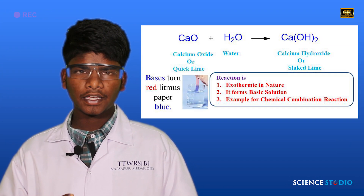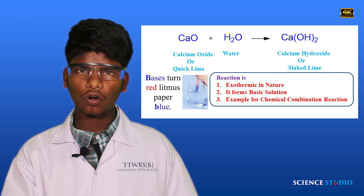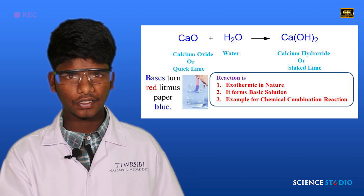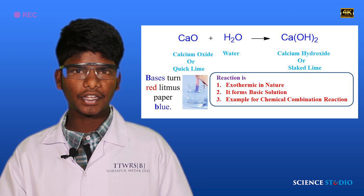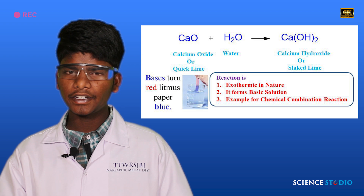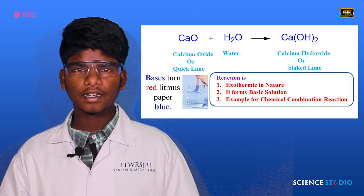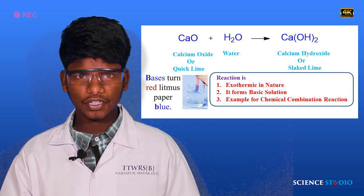The red litmus paper turns to blue, which indicates the solution is basic in nature. The conclusion is: calcium oxide reacts with water to form calcium hydroxide. It is an exothermic reaction, it is basic in nature, and it is an example of a chemical combination reaction. Thank you.